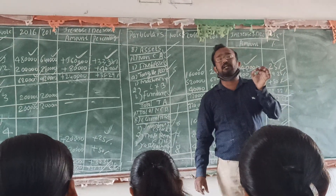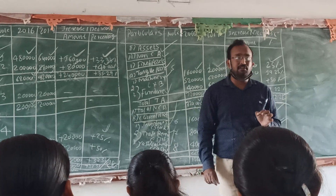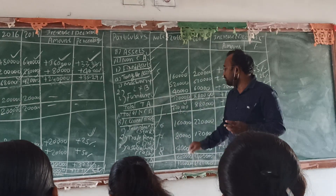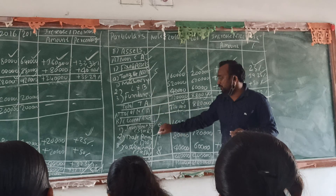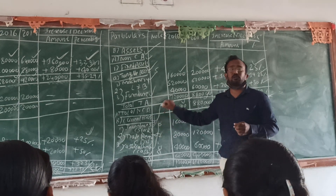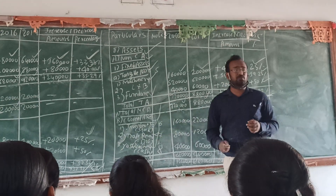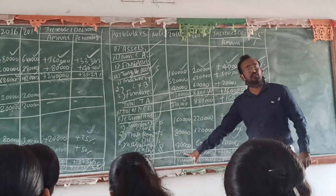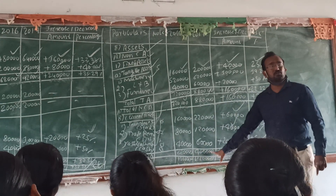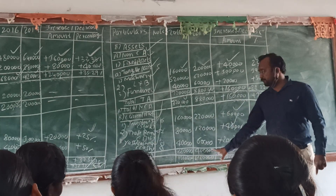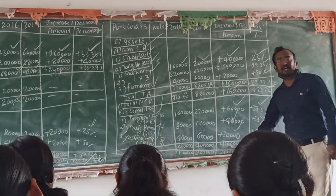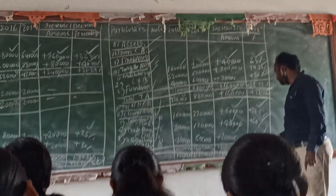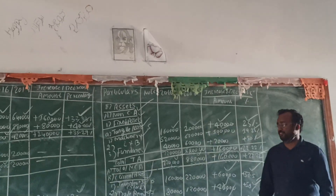Total current assets: the first year is 10,80,000. The difference amount is 1,20,000 and the percentage is 42.86.